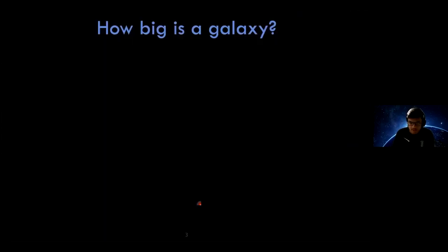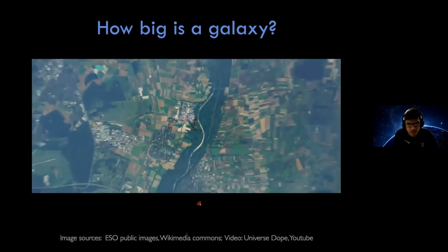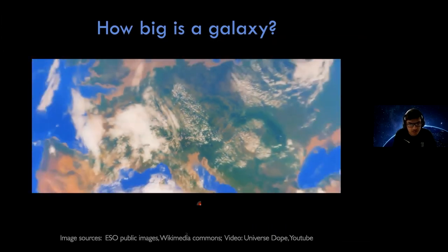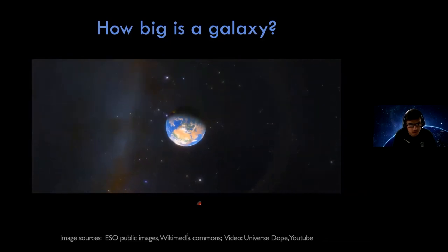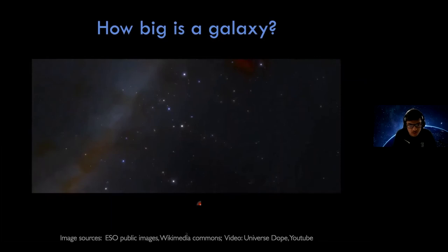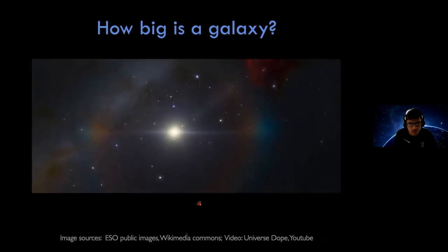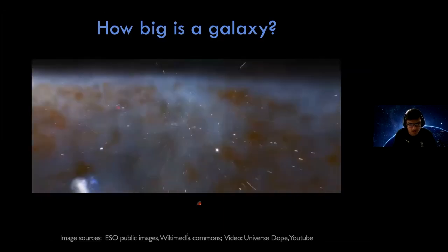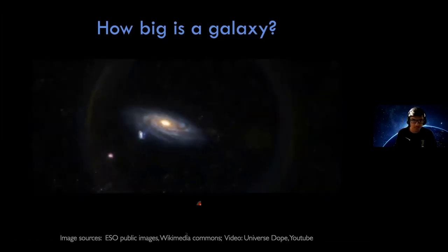To get a sense of how big galaxies really are, we'll start zooming out from a building at a constant rate, and in the end we'll reach the Milky Way and the other two galaxies from the first picture. Now here we are zooming out from a building. We have slowly reached Europe, then Earth, and now we have the Moon, then the Sun.